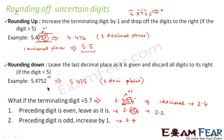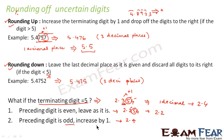To summarize rounding off: round up when the terminating digit is greater than 5; round down when it is less than 5. When it equals 5, if the preceding digit is even, leave it as is; if the preceding digit is odd, increase it by 1.